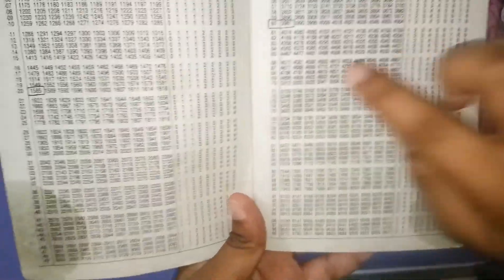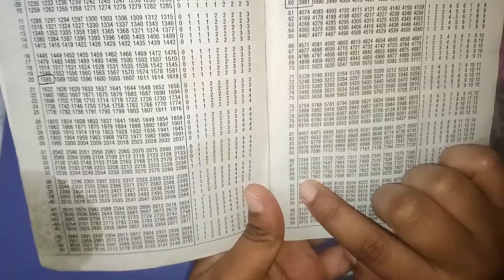As you can see on this page, 0.90 is 7943 under the zero column, so write that down.